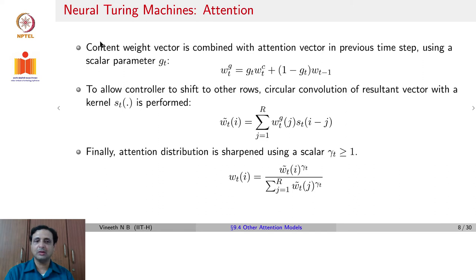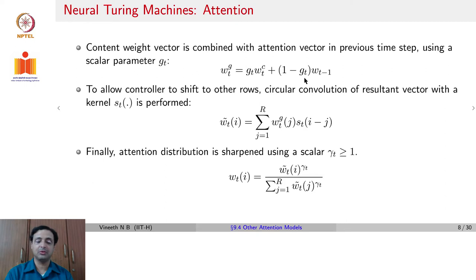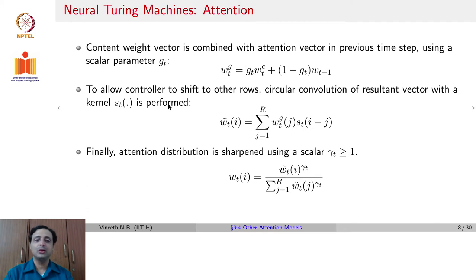Once you finish the content-based addressing, you combine this with the attention vector from the previous time step. Your final attention is given by interpolating the current attention and the previous attention Wt−1 using a scalar parameter gt. That gives you the attention vector to use in this time step. But we still have location-based addressing to do.